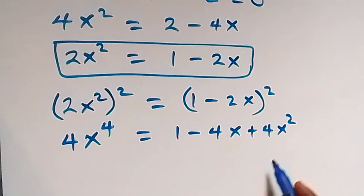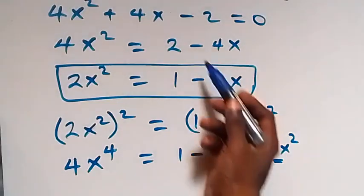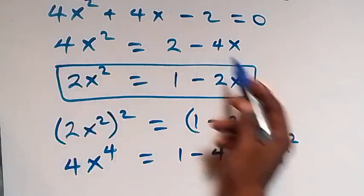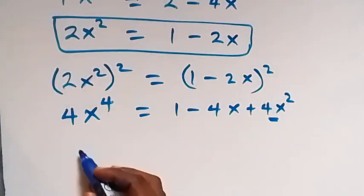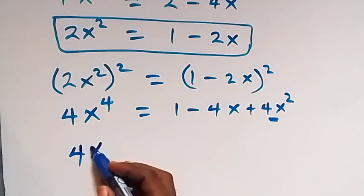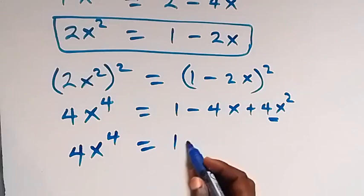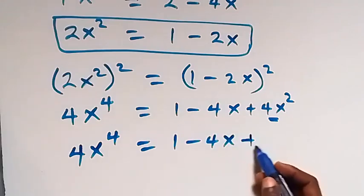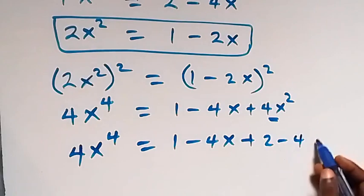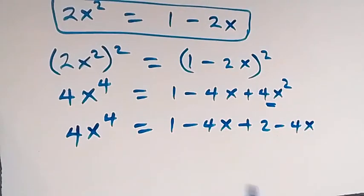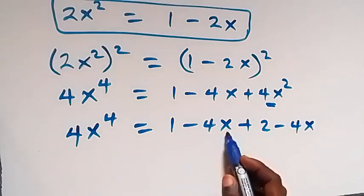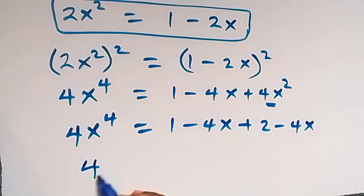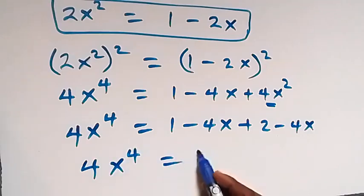We can recall that 4x² can also be written as 2 minus 4x, from the previous line. So instead of writing 4x², we substitute 2 minus 4x. This gives us 4x⁴ equals 1 minus 4x plus 2 minus 4x, which simplifies to 4x⁴ equals 3 minus 8x.